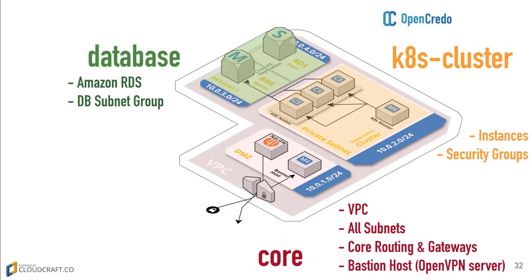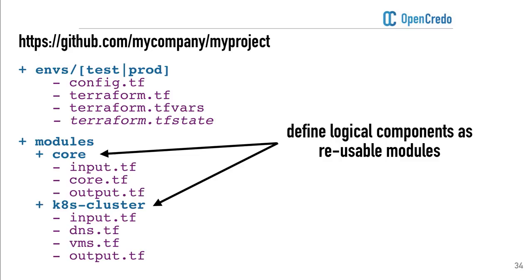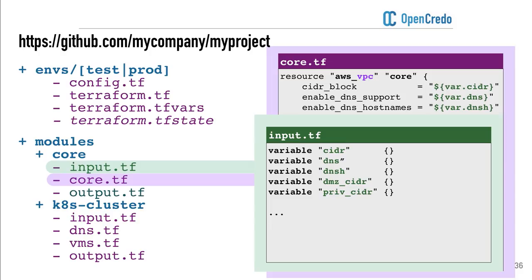For each module — looking at the core module for example — we define all the resources that make up the creation of that particular component. For the core setup, we create things like the Amazon VPC, public subnets, and private subnets. We also want a very clear contract defining inputs and outputs. The convention I tend to use is to have an input.tf file specifying what you can configure the module with, and an output.tf for the outputs. So you can pass in things like the CIDR range, how big your VPC is going to be, and sizes for the DMZ CIDRs and private subnets.